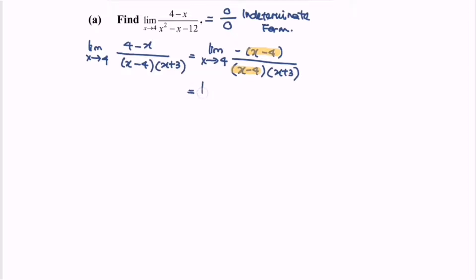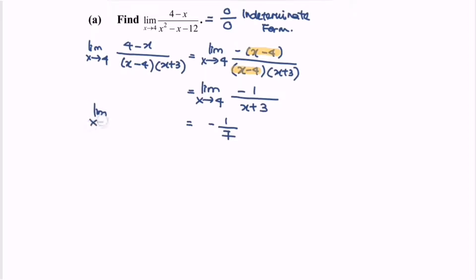Rewriting the situation: the limit when x approaches 4 gives us negative 1 over (x plus 3). Substituting the value 4, we obtain negative 1 over 7. So the limit when x approaches 4 for the function (4 minus x) over (x squared minus x minus 12) is negative 1 over 7.